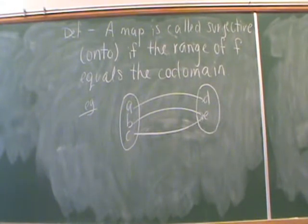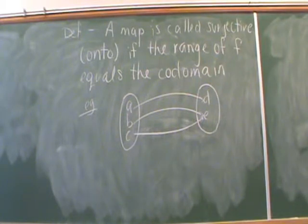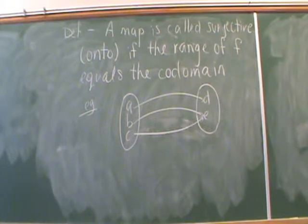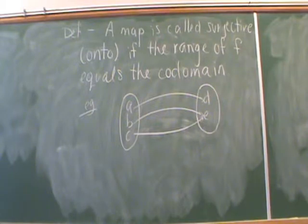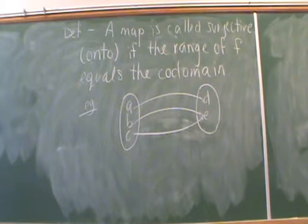A map is called surjective if the range of the map is equal to the codomain. Surjective is also sometimes called onto. Here's an example where the domain is {A, B, C} and the codomain is {D, E}. Notice that the range of F is equal to the codomain.